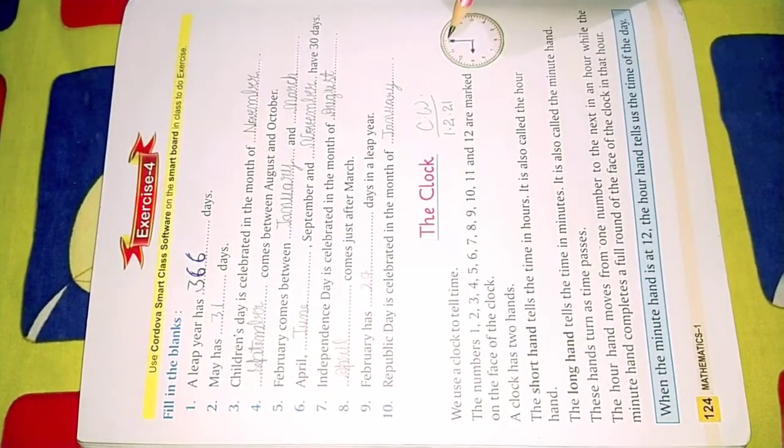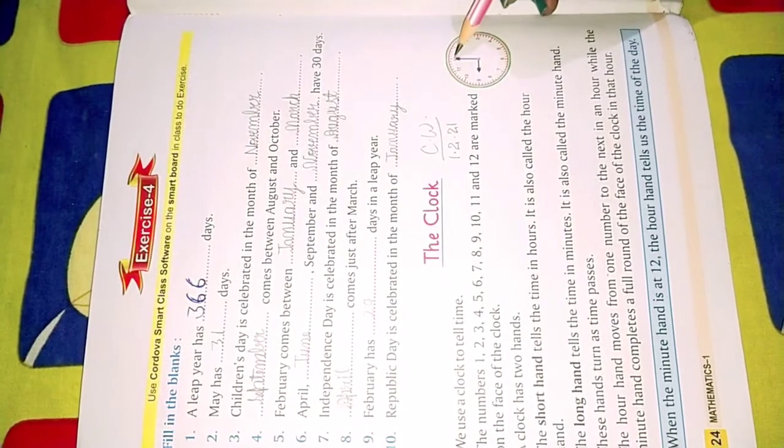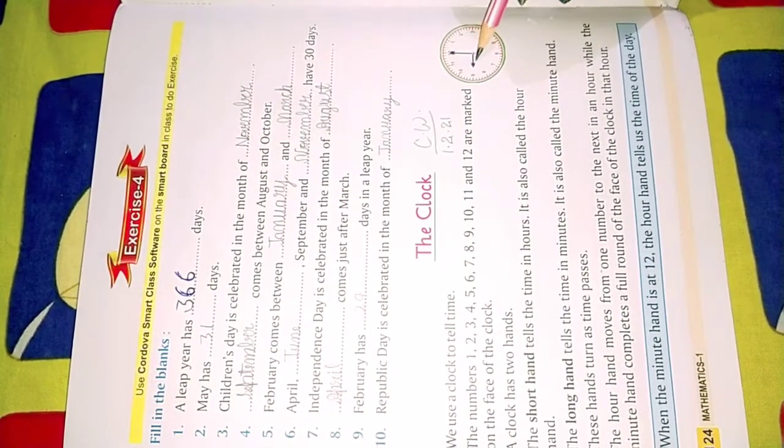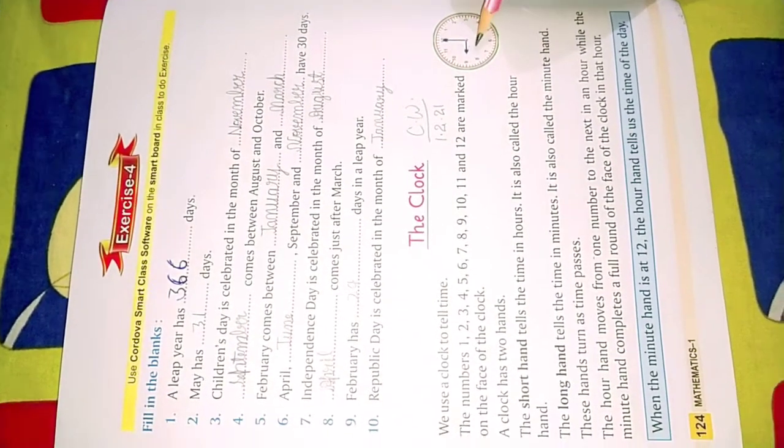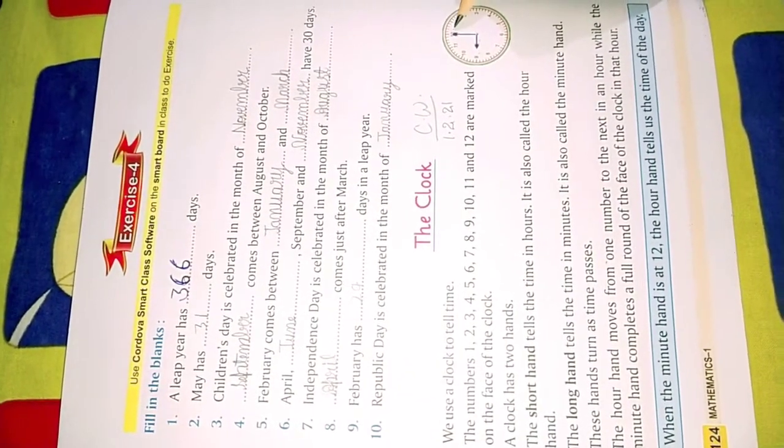See on the clock: 12, 1, 2, 3, 4, 5, 6, 7, 8, 9, 10, 11. There are two hands - one short hand and one long hand. The short hand tells the exact what is the time, and the long hand tells the minutes.